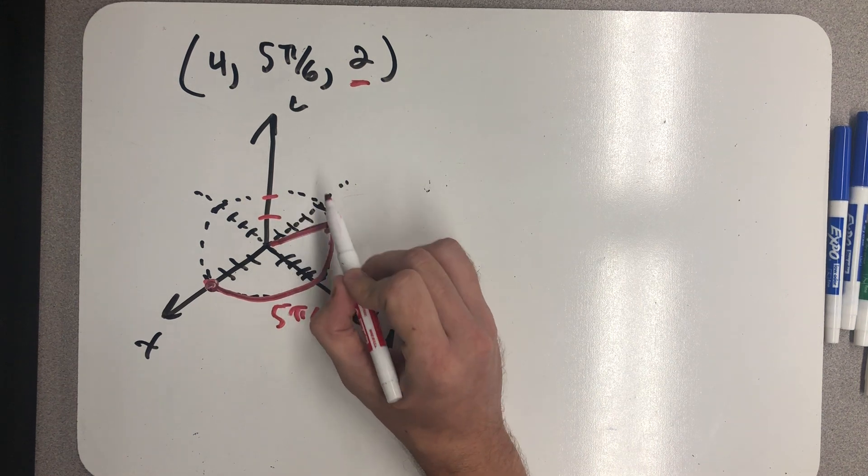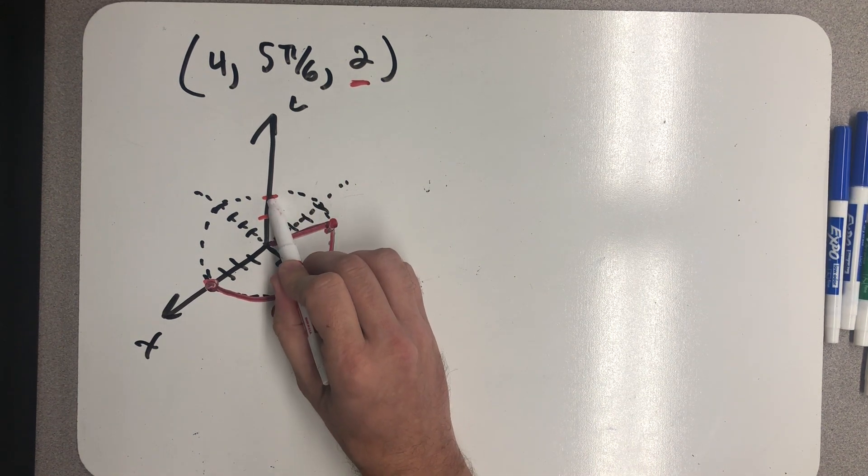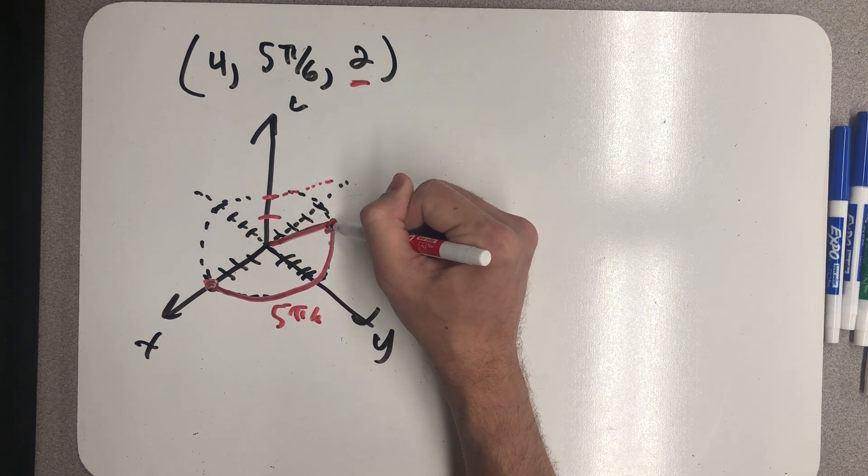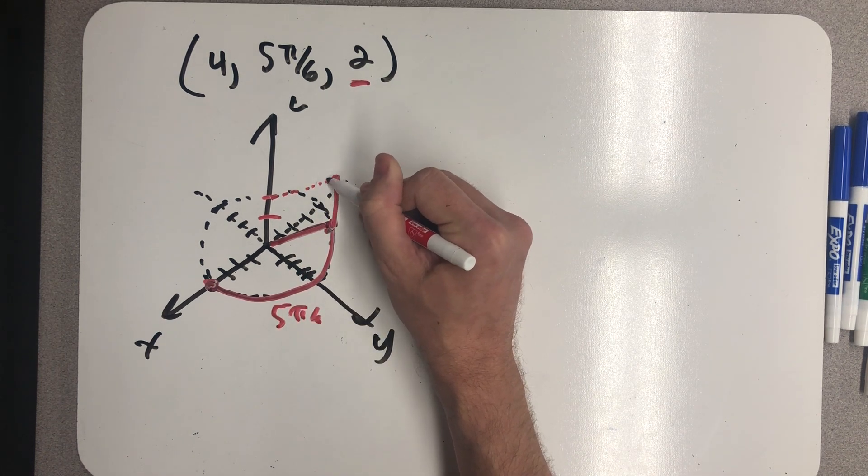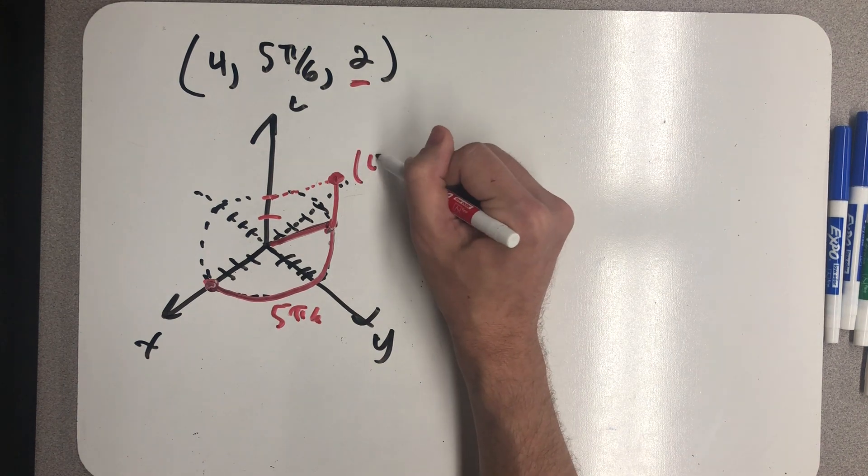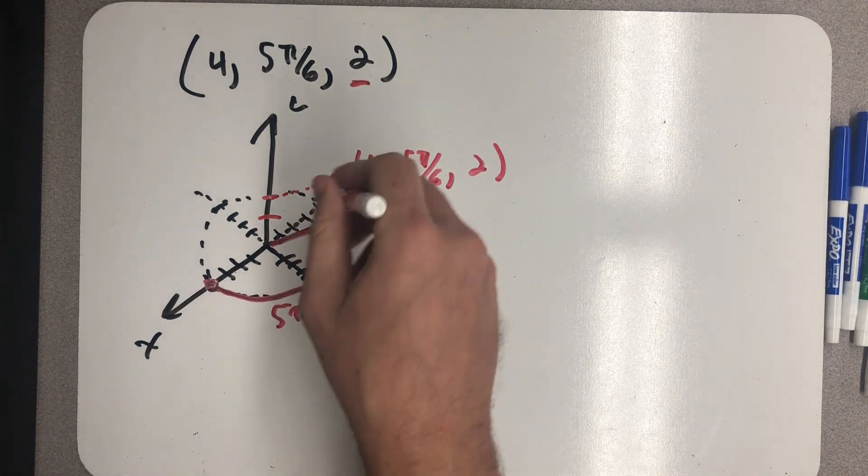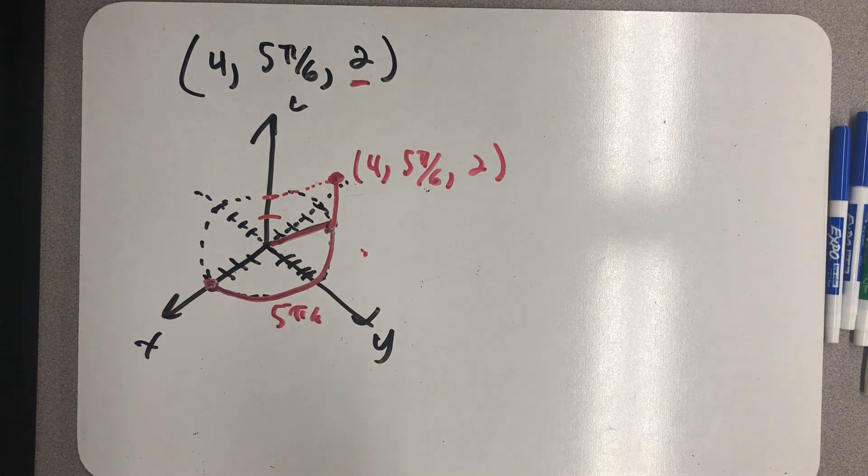And so what I'm going to do is draw something that's parallel to this ray, because it's right above that ray. And then parallel to the z-axis, there's my point. 4, 5 pi 6, 2. Not in the first octant, right behind it there. And that's our point.